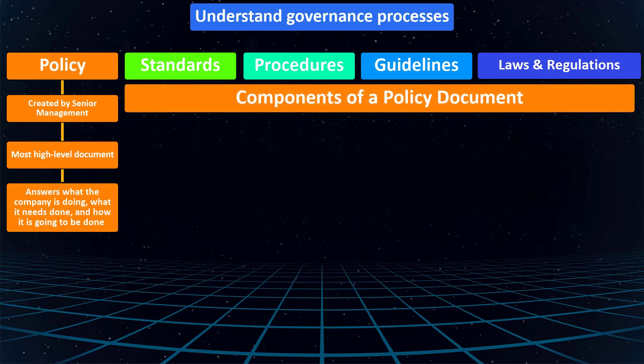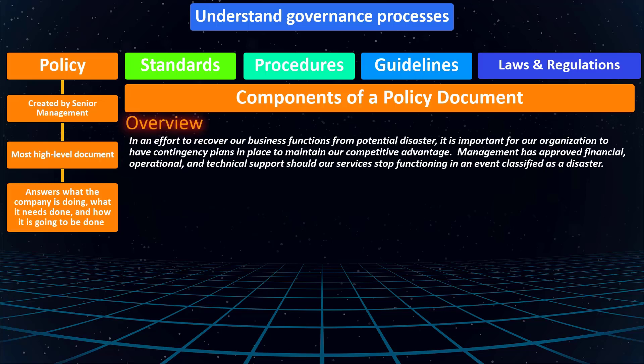A policy document might start with a quick overview of the reason it is being created. For example, this policy is centered around disaster recovery and might state: 'In an effort to recover our business functions from potential disaster, it is important for our organization to have contingency plans in place to maintain our competitive advantage. Management has approved financial, operational, and technical support should our services stop functioning in an event classified as a disaster.'